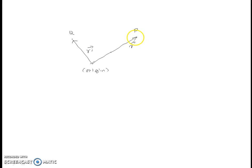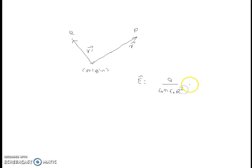The electric field at point P due to the source charge Q is given by E = Q divided by 4 pi epsilon naught r squared, times the unit vector a_r. Here, vector r is given by vector r minus r dash, and the magnitude is given accordingly.